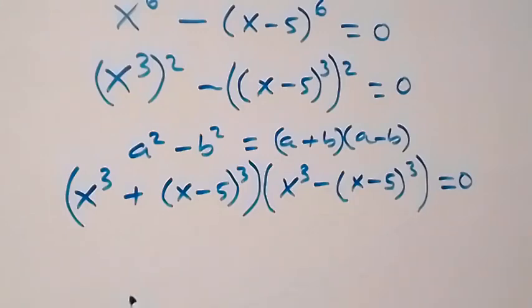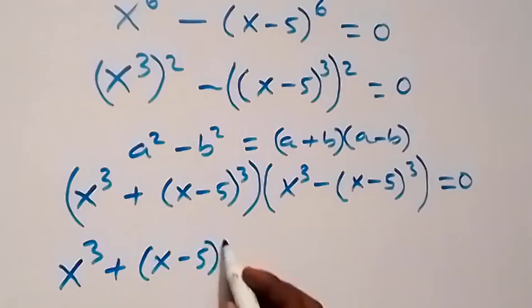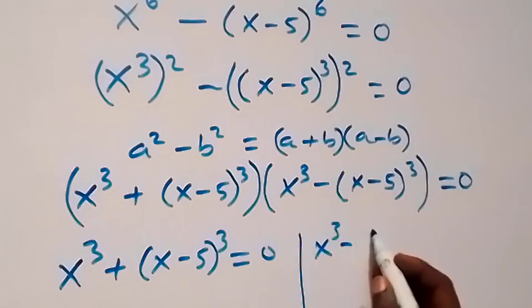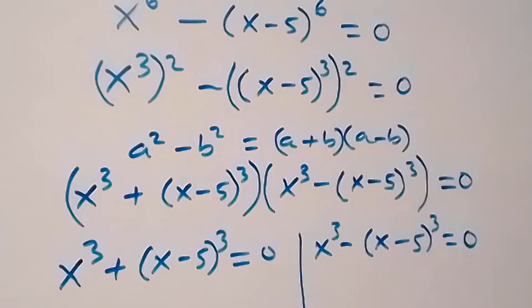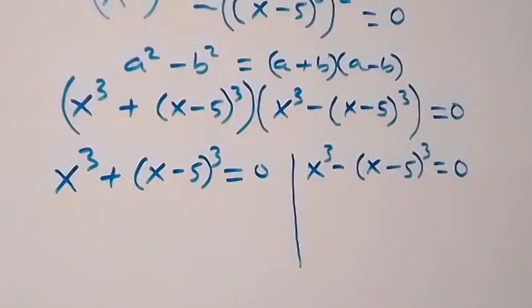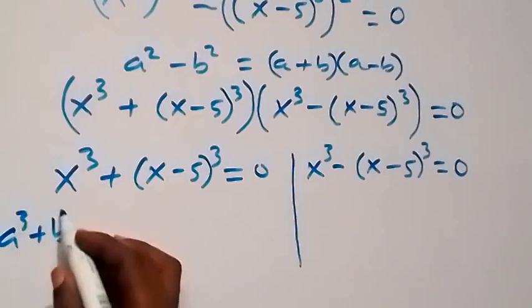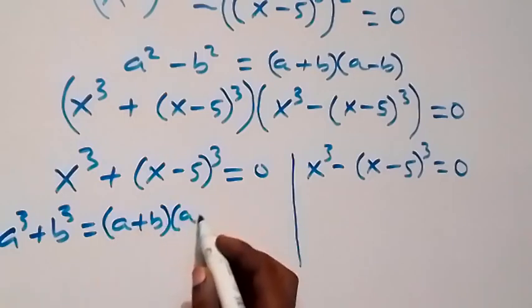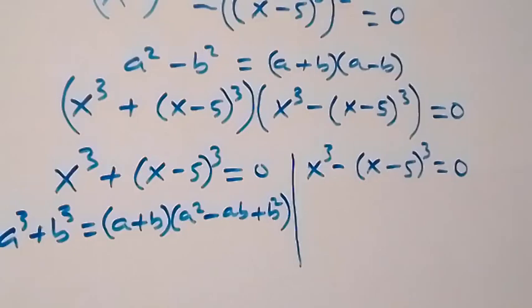On this side we have x cubed plus (x minus 5) cubed equals 0, and on the other side x cubed minus (x minus 5) cubed equals 0. Applying the sum of two cubes — that is, when we have a cube plus b cube, it gives us a plus b, into bracket a squared minus ab plus b squared.